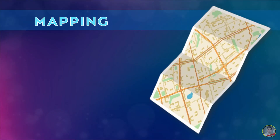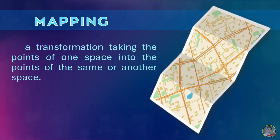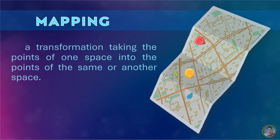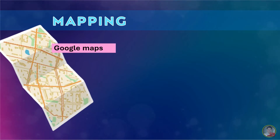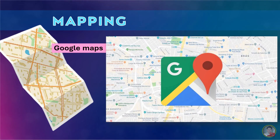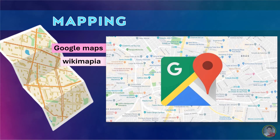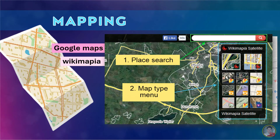The last online platform is mapping. This online platform is a transformation taking the points of one space into points of the same or another space. Examples are: number one is Google Maps, a desktop web mapping service developed by Google. Next is Wikimapia, a multilingual open-content collaborative map where anyone can create places, tags, and share their knowledge.